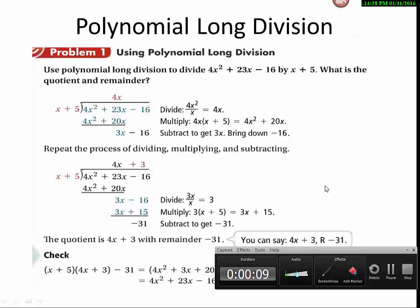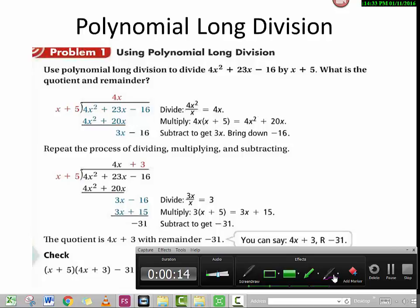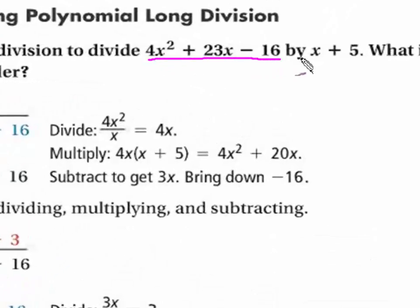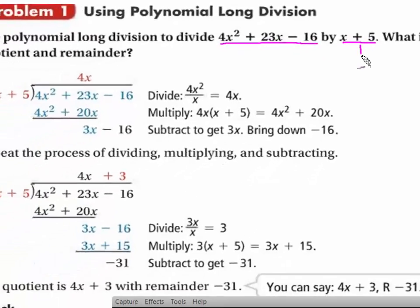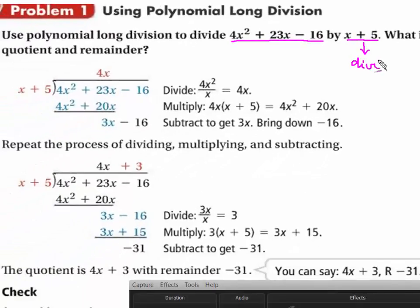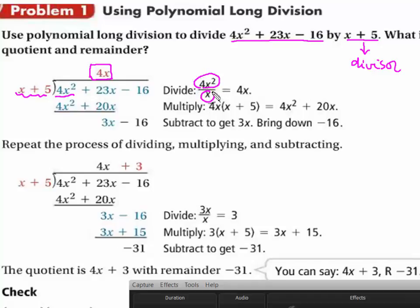Here is an example of using polynomial long division. We have a polynomial function divided by the divisor x plus 5, which is right here. The first part of the quotient that we have is 4x. How do we get 4x? We take the first term of the polynomial function and divide it by x, which gives us 4x.